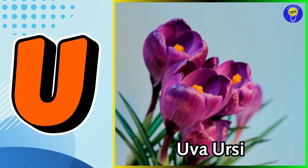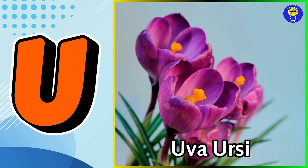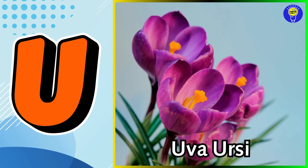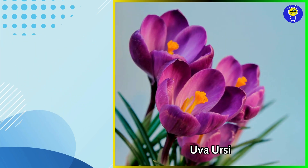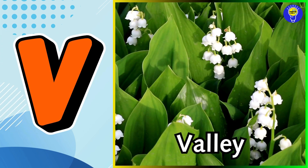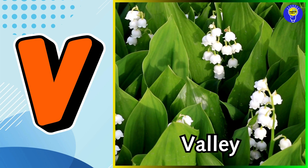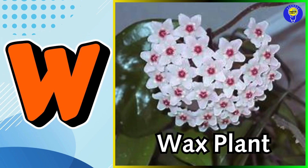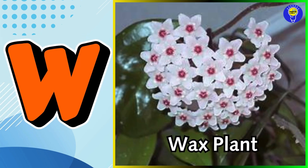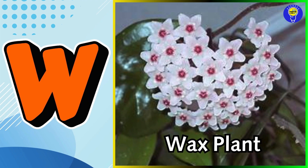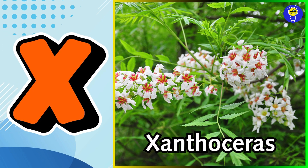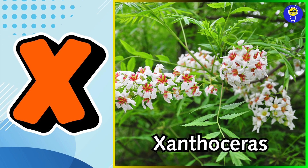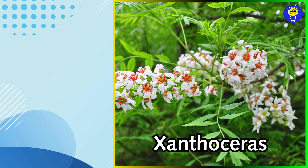U is for uva ursi flower. V is for valley flower. W is for wax plant flower. X is for xanthoceros flower.